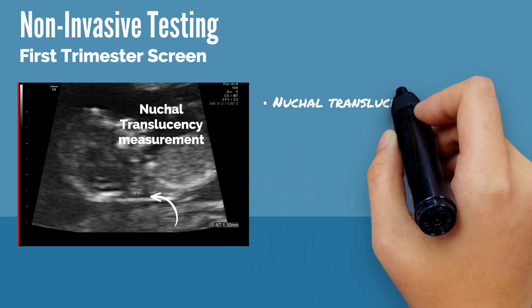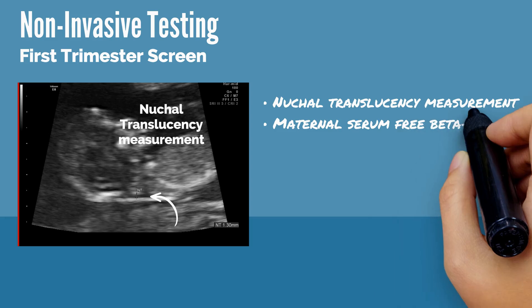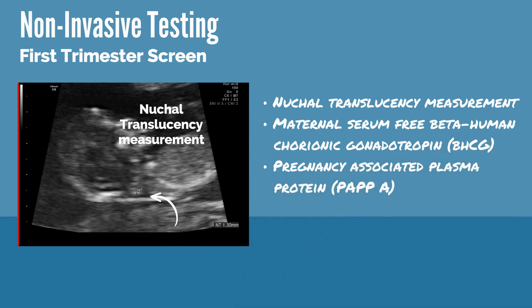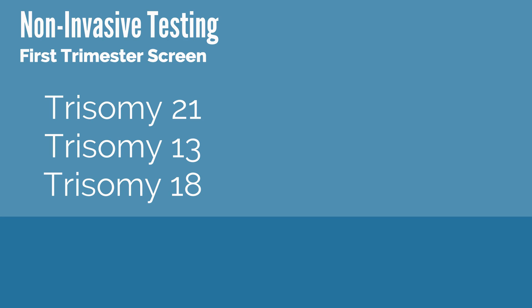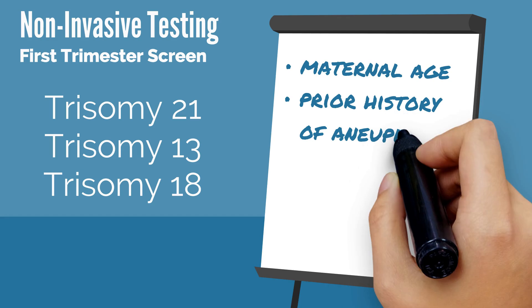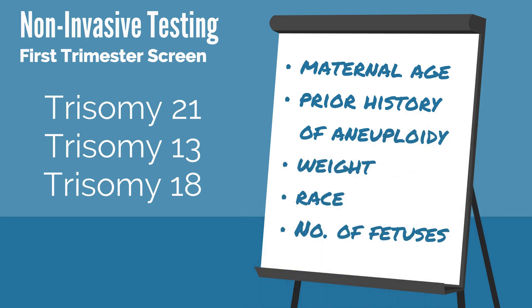First trimester screening includes nuchal translucency measurement, maternal serum free beta-human chorionic gonadotrophin (beta-HCG), and pregnancy-associated plasma protein (PAPP-A) levels. HCG is a placental hormone initially secreted by the syncytiotrophoblast in the conceptus, and PAPP-A is the largest of the pregnancy-associated proteins produced by the embryo and the placental syncytiotrophoblast during pregnancy. Using a combination of analyte levels and NT measurements, a risk estimate for trisomy 21, 13, and 18 is calculated. Factors such as maternal age, prior history of aneuploidy, weight, race, and number of fetuses are also included in this calculation.